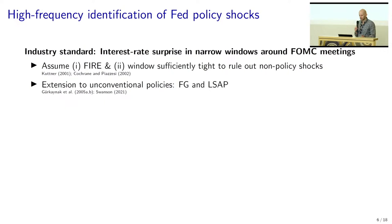Let me show you how this identification works. I want to take one step back to make sure we're all on the same page regarding the high-frequency approach of monetary policy shock identification — this is the industry standard. It builds on using asset prices in a narrow window around FOMC meetings in order to get a proxy of the unobserved underlying monetary policy shock. This works well if you make two assumptions: full information rational expectations on the side of financial markets, and that you can set up a window around an FOMC meeting sufficiently tight to rule out that shocks other than monetary policy shocks occurred in that window.